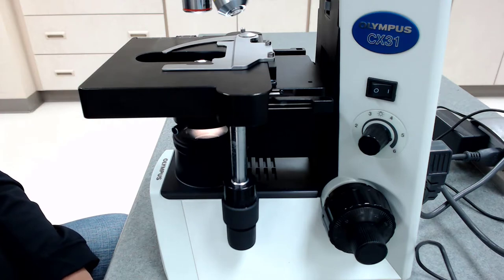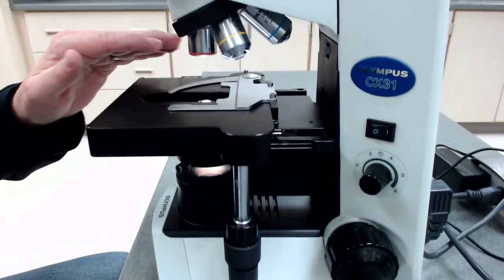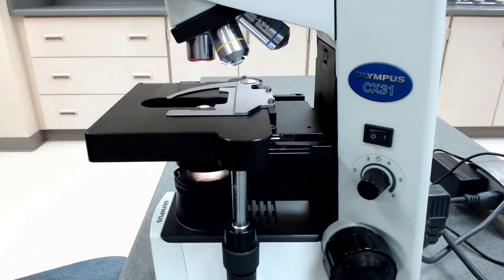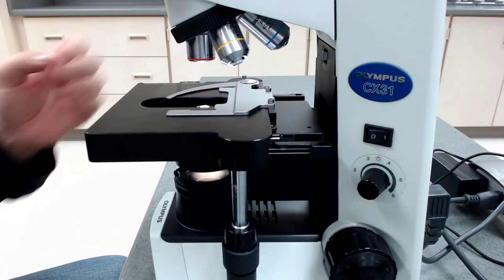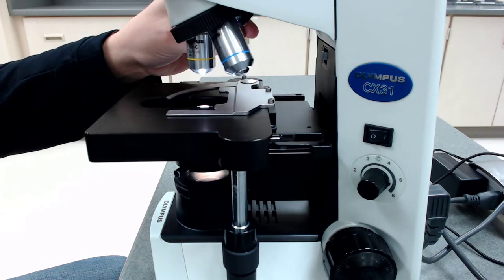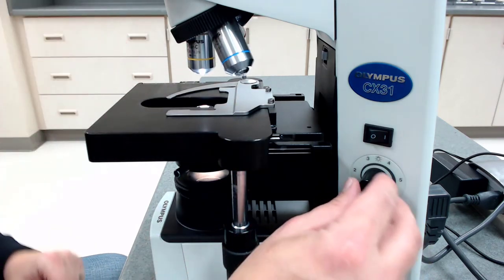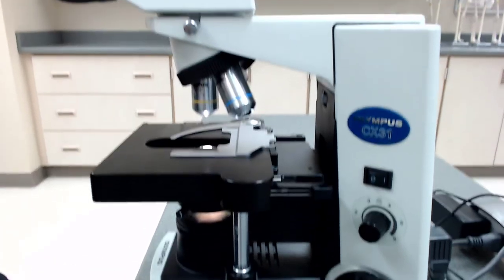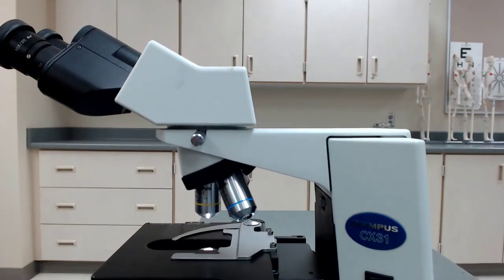But so a compound microscope has a multiple lens system. And that's not these different objective lenses here. We're actually using multiple lenses at the same time. So let's say we switch it here to this low power, the 10x objective.